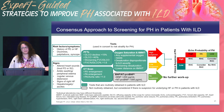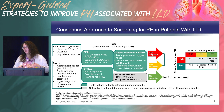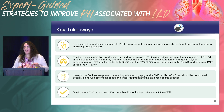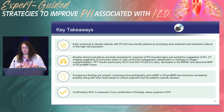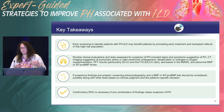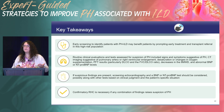Sometimes you think somebody has pulmonary hypertension and they don't, and vice versa. Using all available information drives you in the correct direction. Key takeaways: early screening to identify patients with PH-ILD may benefit them by prompting early treatment and transplant evaluation in high-risk patients. Routine clinical evaluations, exam, and history can guide when to trigger right heart catheterization or referral to an expert. If suspicious findings are present, obtain an echocardiogram and NT-proBNP or BNP, then discuss further testing — including right heart catheterization, which is required to confirm pulmonary hypertension.